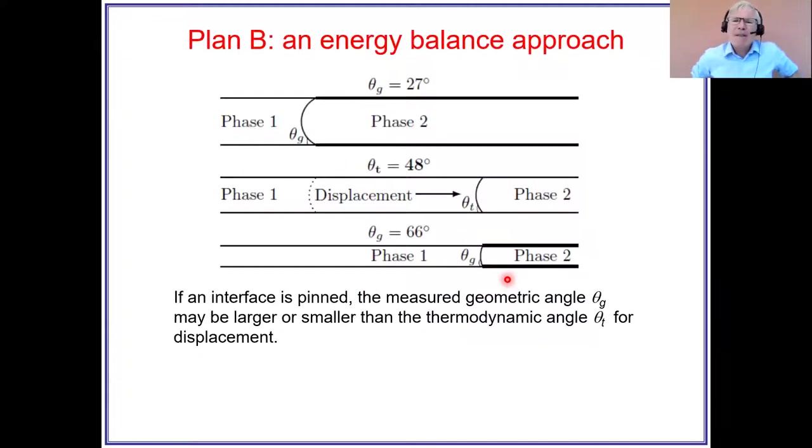So that's plan A. Plan B is an energy balance approach. And the reason why we do this is even if what we're doing is correct. So we have what we call a geometric angle. We can imagine a case where phase one is displacing phase two and say here, we have a surface that's quite oil wet. It repels phase one. So then at rest, we may find an angle that's quite low, but for displacement, the angle has to be higher. And the thing is, we're interested in displacement. One thing's displacing another in a porous medium. We want models that model that displacement. We don't want the contact angle at rest. We want the contact angle when something moves.